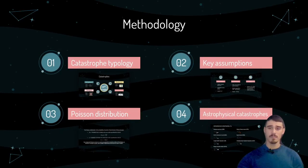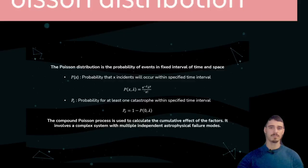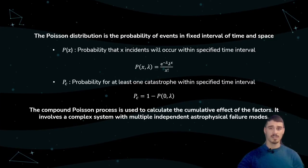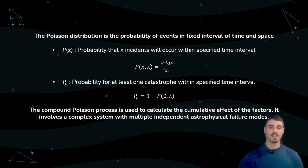Next up is the main method of calculation used in this paper. To calculate the different probabilities, this paper uses a simple Poisson distribution. The Poisson distribution expresses the probability of a given number of discrete events occurring in a fixed interval of time. We use a compound process to calculate the cumulative effects of all the factors, involving a complex system with multiple independent astrophysical failure modes.